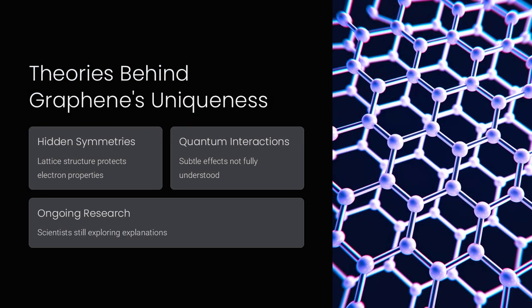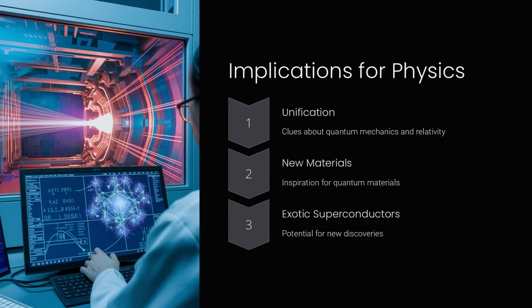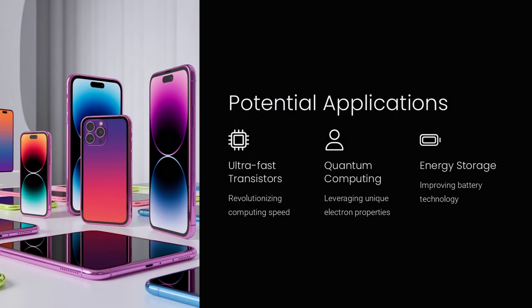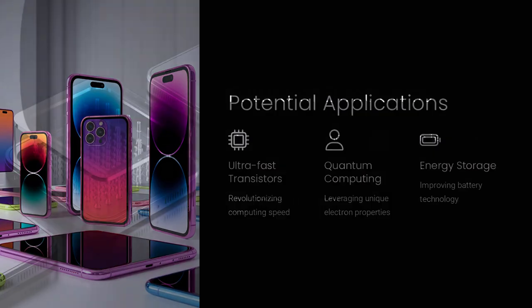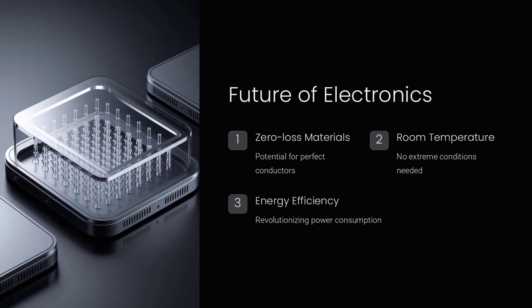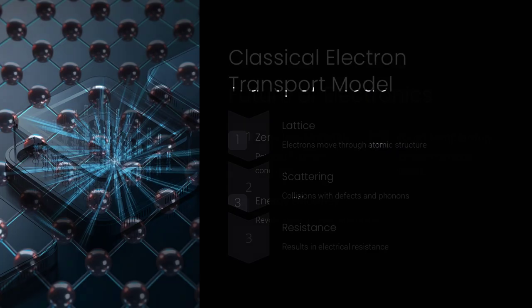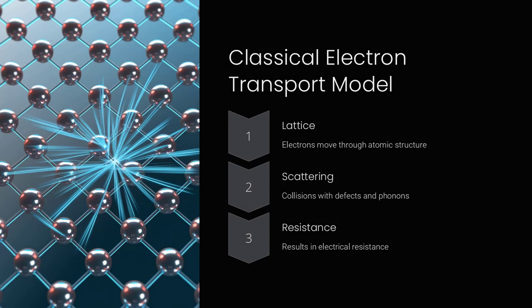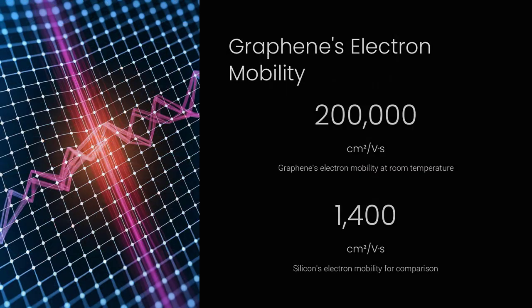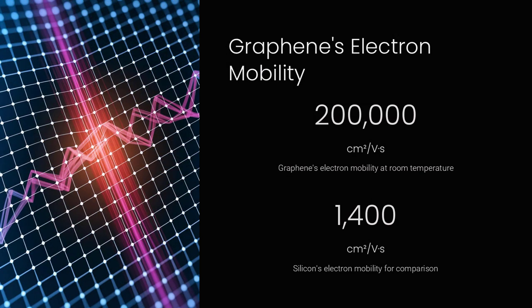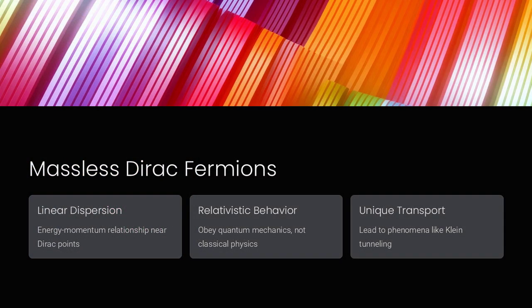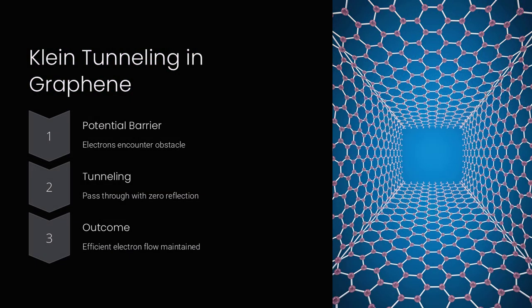Graphene's electrons don't behave like normal particles with mass. Instead, they act as quasi-relativistic Dirac fermions, moving at a constant velocity of about 1/300 the speed of light, regardless of their energy. This means they don't slow down like ordinary electrons in metals. Unlike most materials where electrons scatter due to impurities and lattice vibrations, graphene's unique honeycomb lattice creates a linear energy-momentum relationship, similar to photons in a vacuum. This leads to several paradoxical effects.